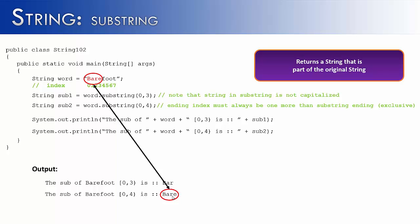And I've added a note in there to indicate what we've just done. The ending index must always be one more than the substring's ending. And so if we're looking for bare, which looks like it would end at 3, we would put in 4.